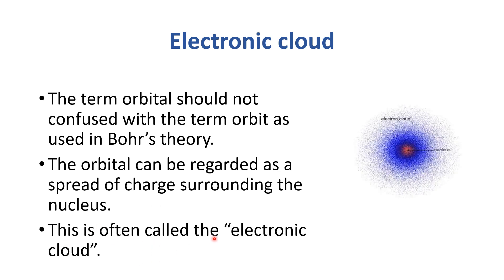This is often called the electronic cloud. Just like this. This is nucleus and this is spread of charge. This is called the electronic cloud or orbital.